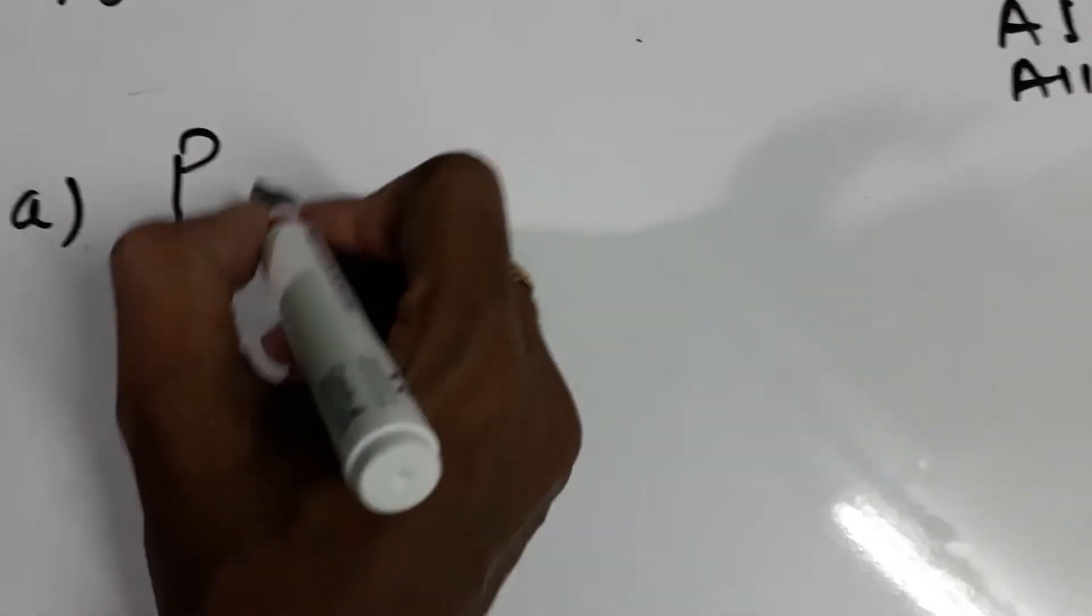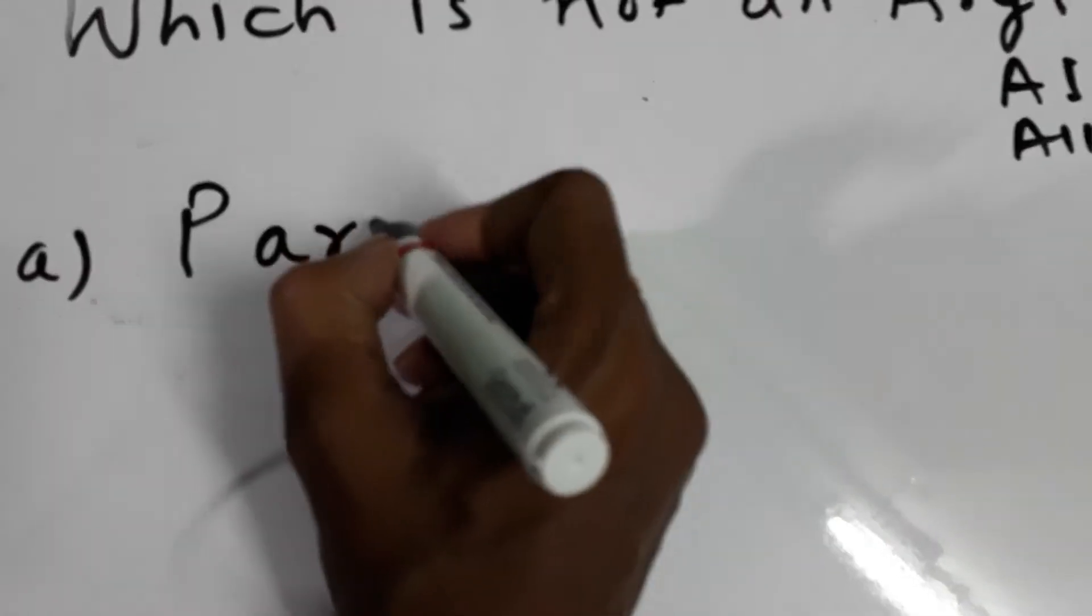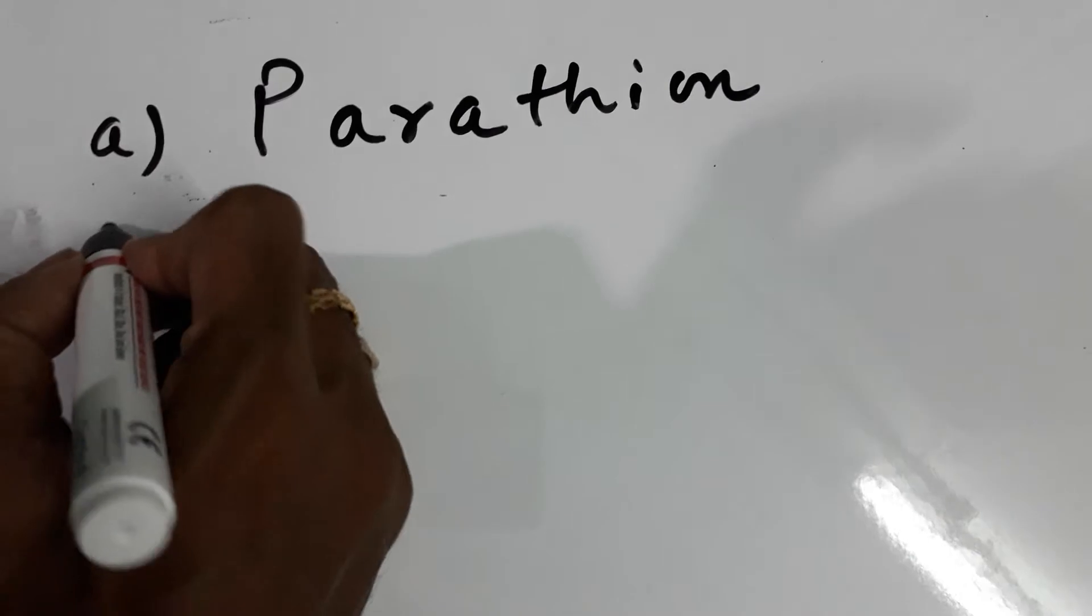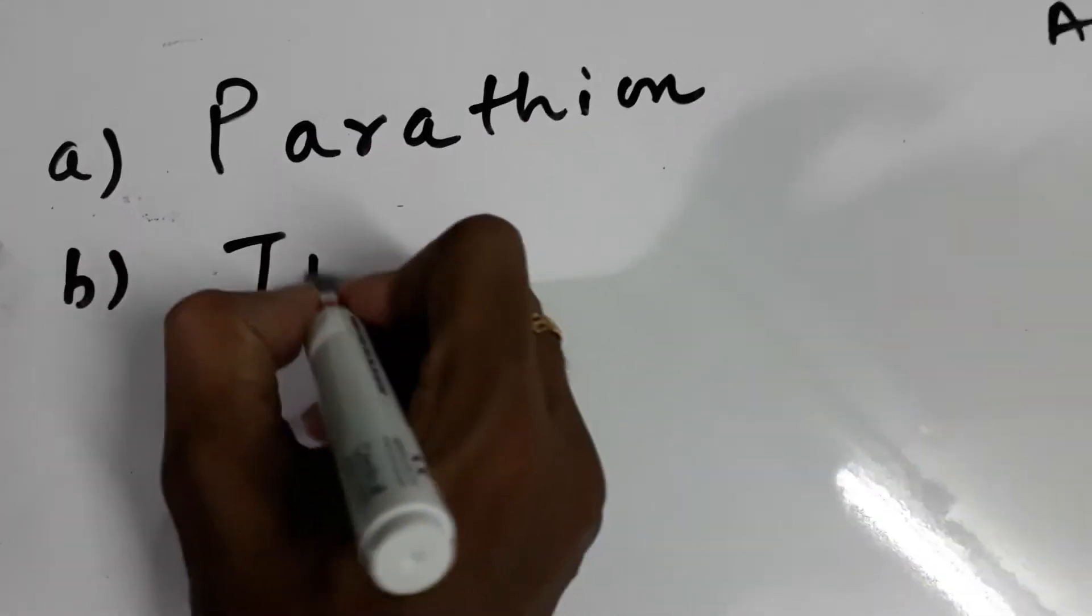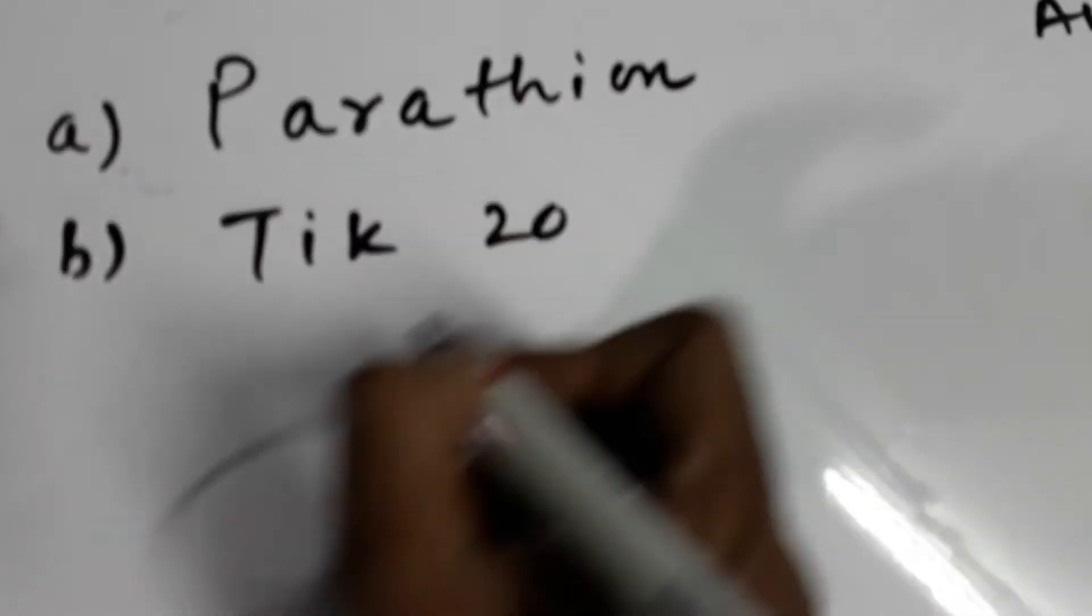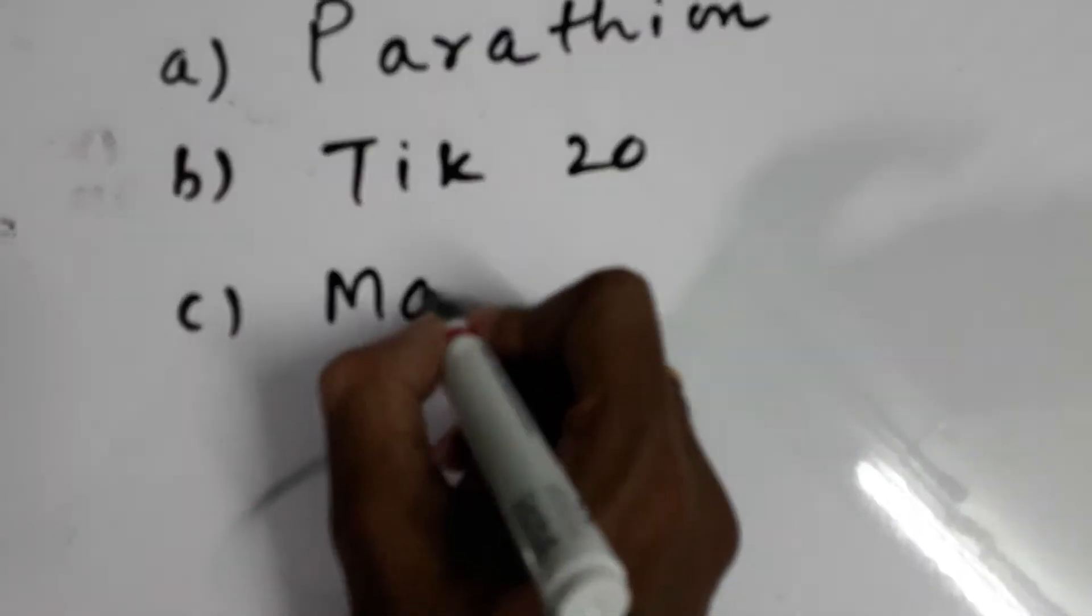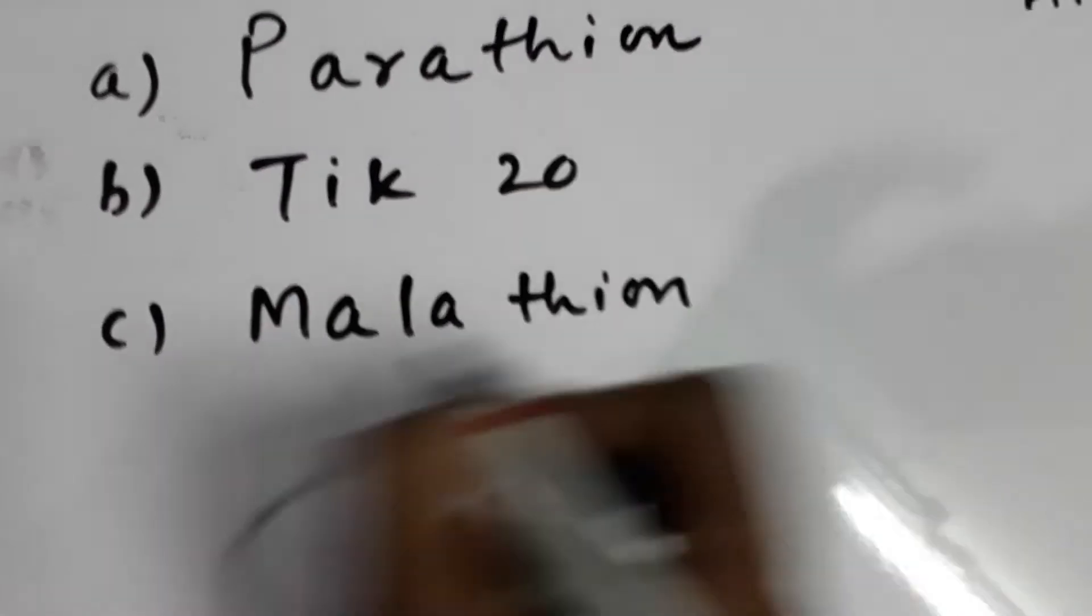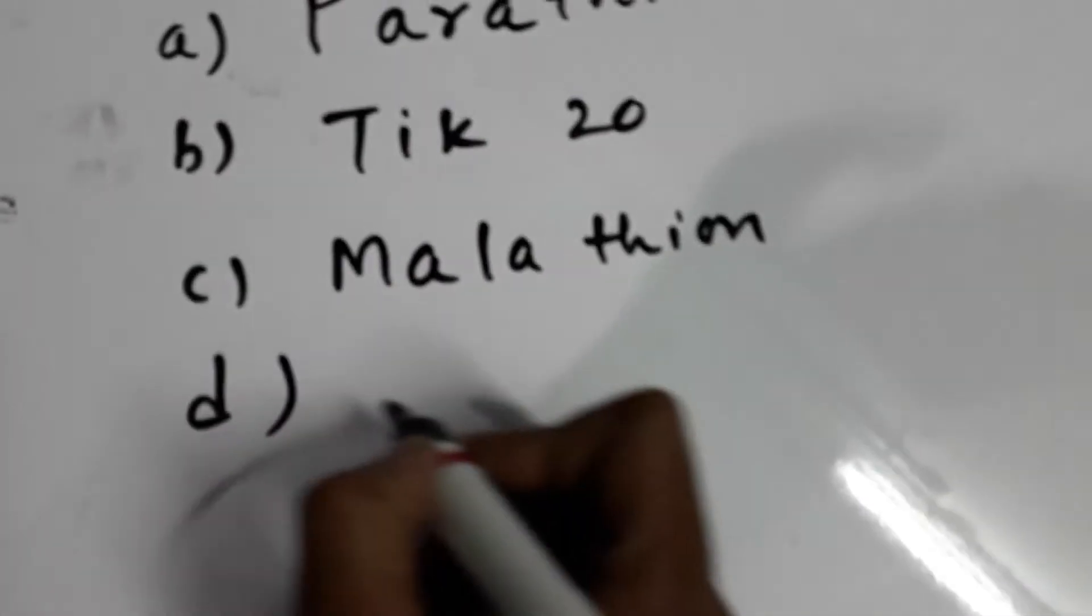First choice is Parathion, B is Tic-20, C is Malathion, and D is Paraoxon.